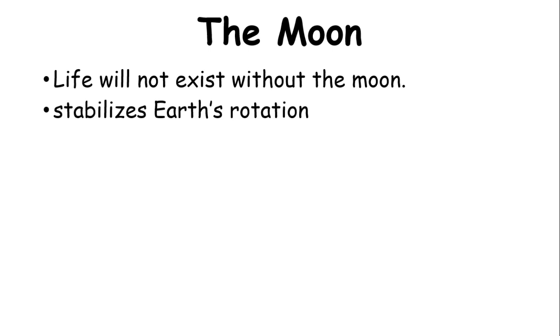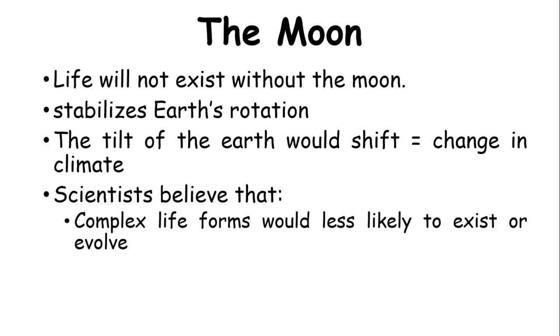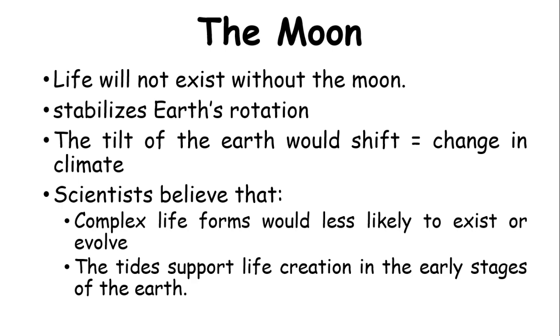Next is the Moon. Surprisingly, life on Earth would not exist without the Moon. It is big enough and far enough to stabilize our planet's rotation. Without it, the tilt of the Earth would shift greatly over time, causing massive changes in the climate. Scientists believe that complex life forms would less likely exist or evolve without the Moon. Scientists also believe that ocean tides that are created by the gravitational pull of the Moon have played an important role in the support of life creation.